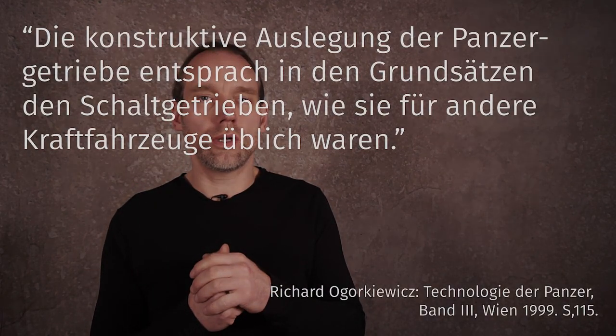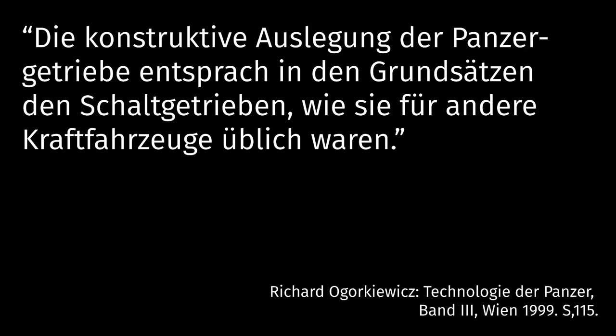Nun muss die Leistung des Motors hier aber irgendwie auf den Boden kommen und dazu diente beim Panzer die Kette. Die Kette sollte die Zugkraft des Motors auf den Boden übertragen und so genug Vortrieb erzeugen. Das bedeutet, irgendwie muss der Motor und die Kette verbunden werden und das tut beim Panzer ein Getriebe. Auch hier bis zum Ende des Zweiten Weltkrieges grundsätzlich wie beim Auto.